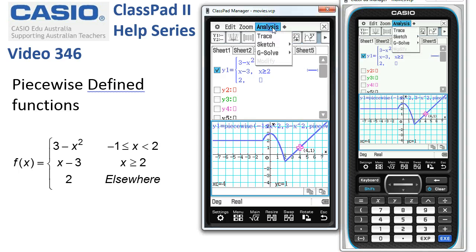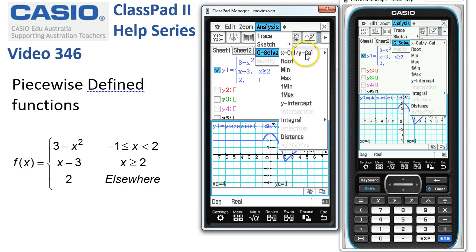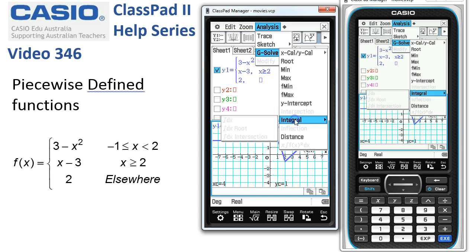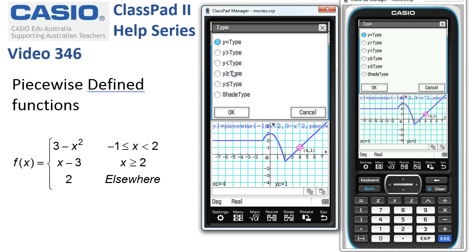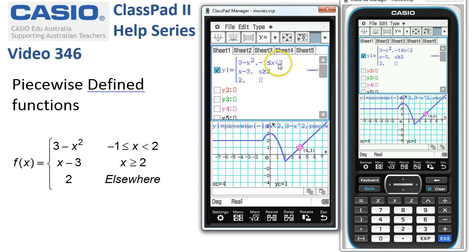So we can trace all along it, but you'll notice up under Analysis and G Solve, quite a few of the functions are grayed out. Intersection, integral is not going to work and so on. So although we can graph them, we can't always carry on and do some analysis beyond just looking at the actual function.